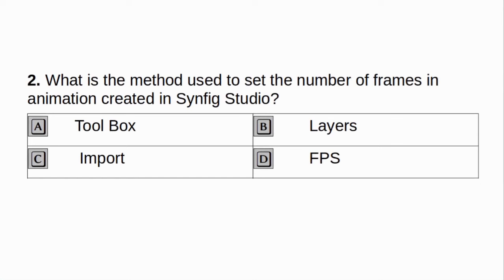What is the method used to set the number of frames in animation created in Synfig Studio? A. Toolbox. B. Layers. C. Import. D. FPS. Answer: D. FPS.